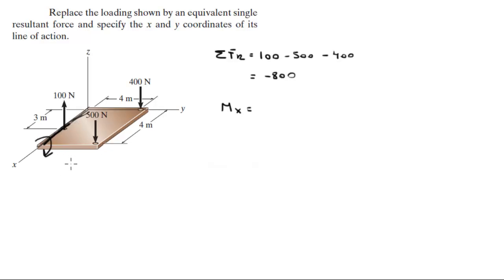It's 500 times 4 because this distance is 4, plus 400 times 4 also because it's the same distance from the x, which comes out to be 3600, the moment that creates about the x going clockwise.